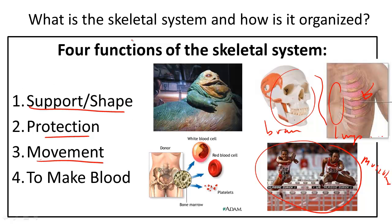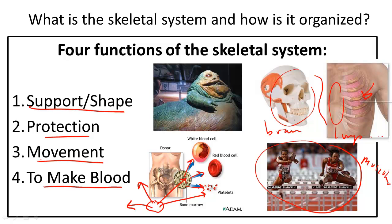Last but not least, these bones — actually surprising to some — make blood. Inside these dense structures are shoots of marrow where stem cells, or unspecialized cells, become specialized into different types of blood cells. Inside the dense portion of bone there is a cavity that contains marrow, which can turn unspecialized cells into white blood cells, red blood cells, platelets, and so on.